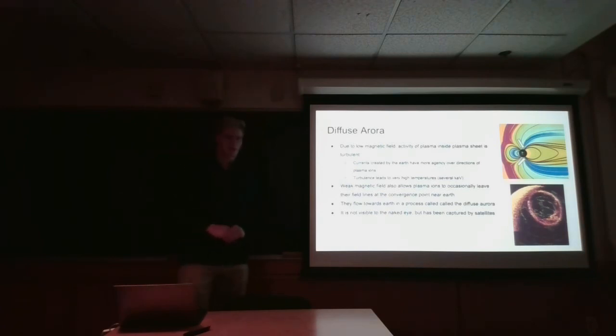And now I'm just going to talk about the diffuse aurora, which is a phenomenon that occurs partly due to the low magnetic field inside the neutral sheet.